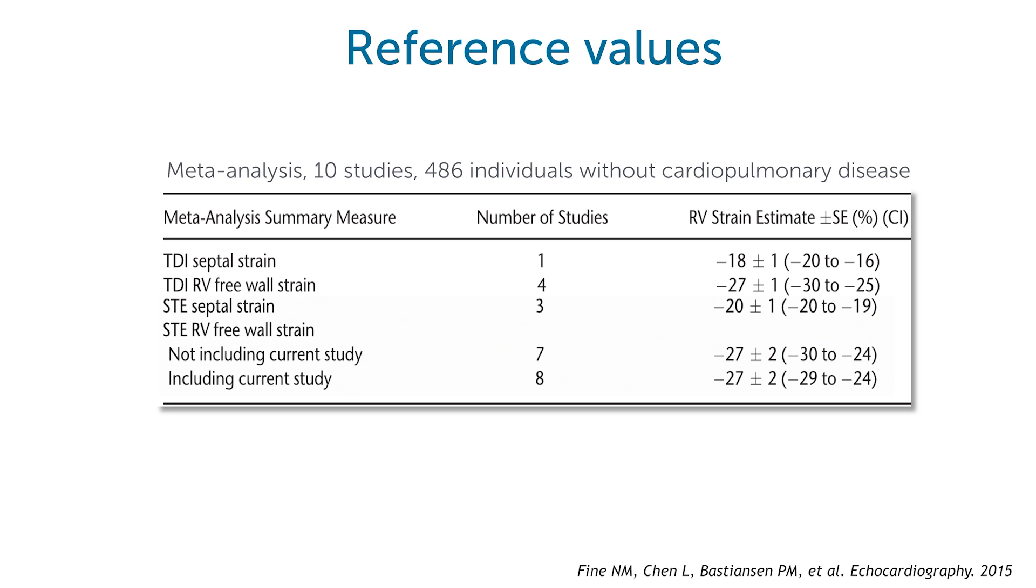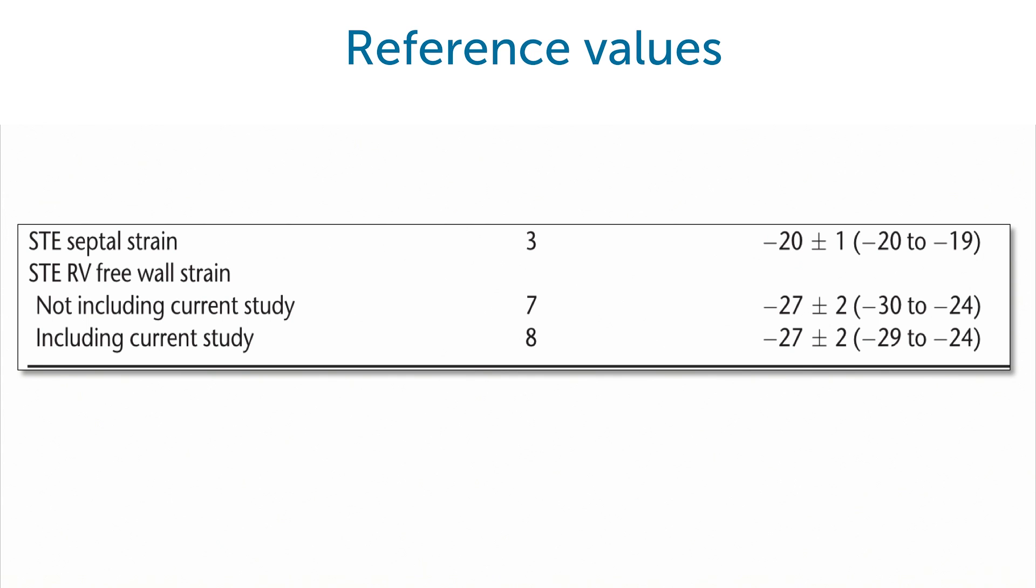And as you can see here, the average normal value for RV free wall strain was around 27 plus minus 2 percent.